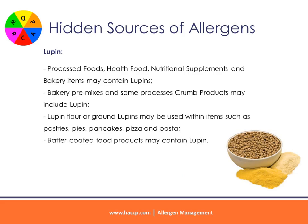Lupin: processed foods, health foods, nutritional supplements, and bakery items may contain lupins. Bakery pre-mixes and some processed crumb products may include lupin. Lupin flour or ground lupins may be used within items such as pastries, pies, pancakes, pizza, and pasta. Batter-coated food products may also contain lupin.